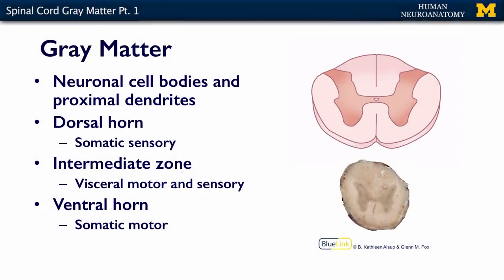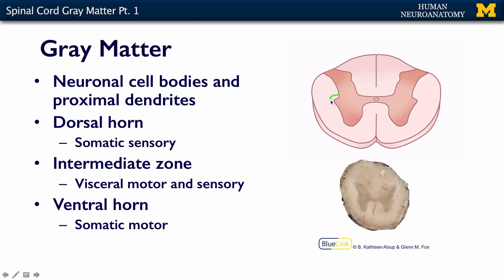In the spinal cord gray matter, we've introduced the fact that we have a dorsal and a ventral horn, and we've introduced that we have an intermediolateral cell column. If we split the cord, we have our dorsal, which is going to be sensory and sensory relays; our ventral, which is motor and motor relays; and the intermediate zone, which lives right in this region.